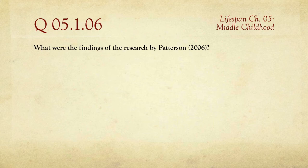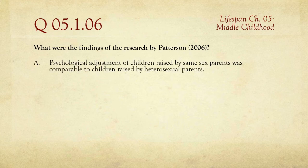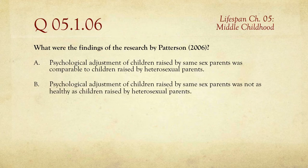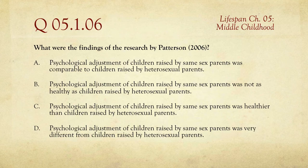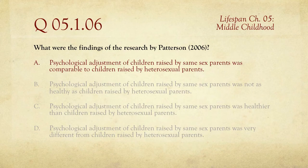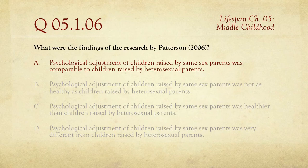The sixth question: what were the findings of the research by Patterson, 2006? This was about same-sex couples rearing children. The answer is that the psychological adjustment of children raised by same-sex parents was comparable to children raised by heterosexual parents. Interestingly, many other studies confirm it doesn't seem to make a big difference in terms of adjustment. Within heterosexual couples there's a huge variation in adjustment levels, and the same is true for same-sex couples — but overall, it doesn't seem to make a difference.